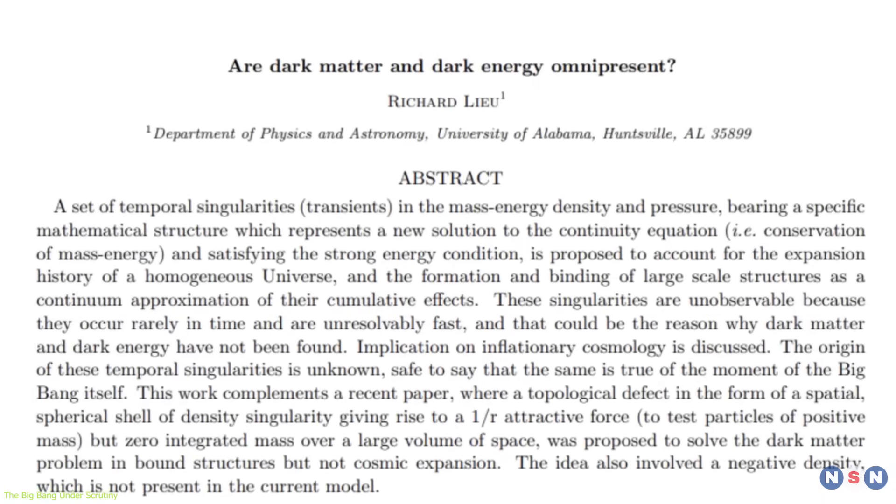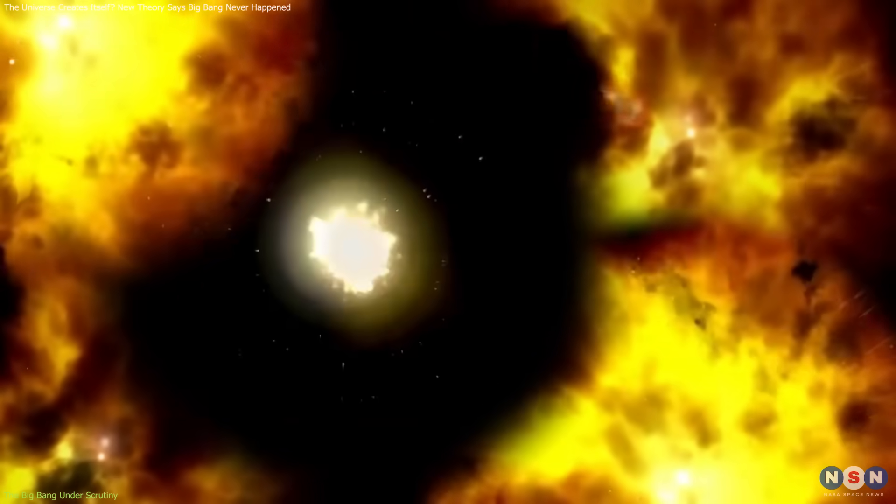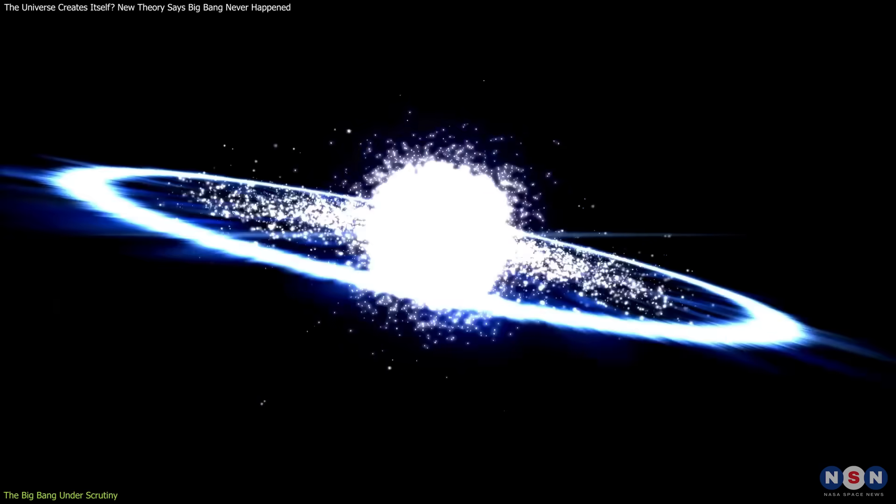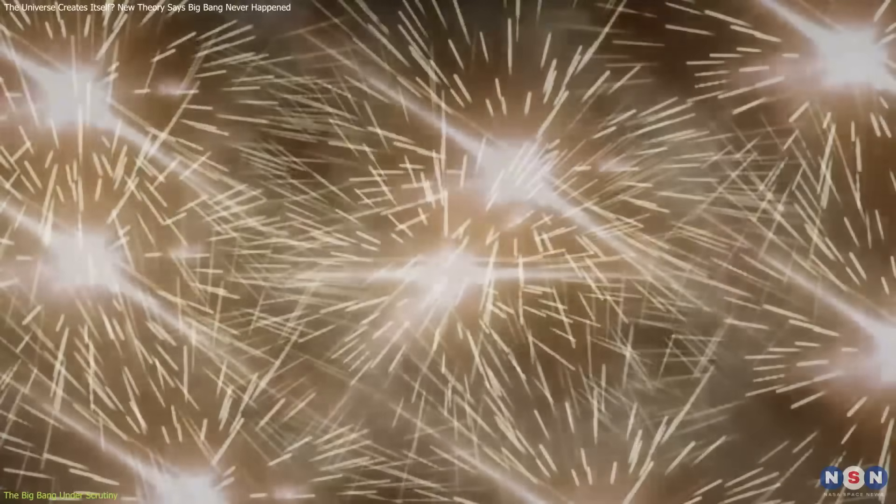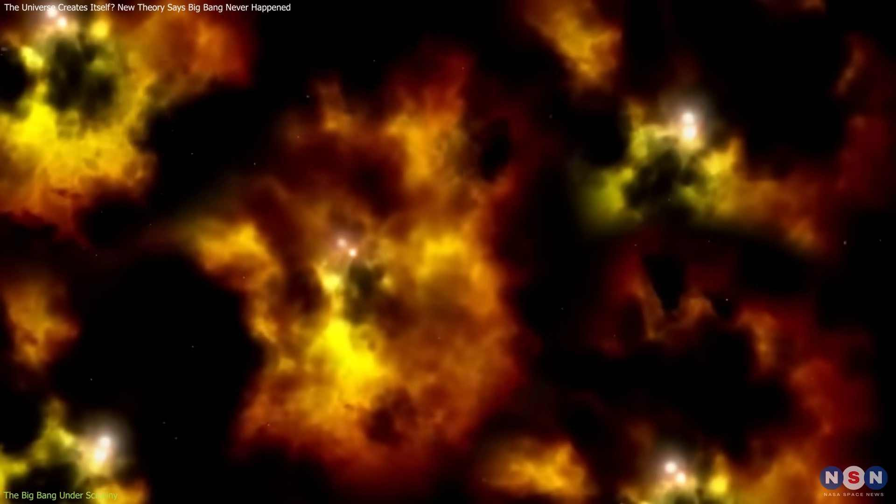One of the boldest comes from Dr. Richard Liu, a physics professor at the University of Alabama in Huntsville. In a recent paper published in Classical and Quantum Gravity, Liu introduces the concept of transient temporal singularities—extremely rapid, localized bursts in spacetime that generate matter and energy. Rather than imagining a universe born from one singular point, Liu's model envisions billions of these bursts occurring independently across the fabric of reality. These events unfold at such high speeds and at such fine scales that they evade current detection.